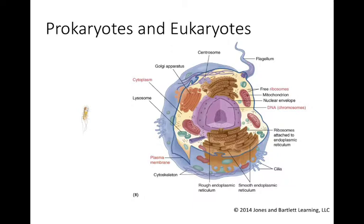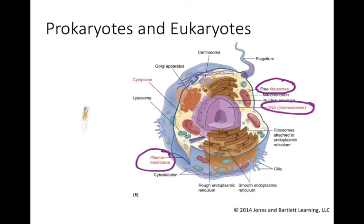we have a Bacillus bacterium with flagella at one end of the cell. In red here, ribosomes, DNA, plasma membrane, and cytoplasm are all structures that are found both in prokaryotes and eukaryotes.